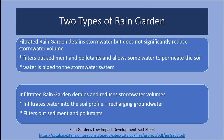Like a bioswale, there are two types of rain garden designs: filtrated and infiltrated. A filtrated rain garden detains stormwater but does not significantly reduce the volume. It filters out sediment and pollutants and allows some water to permeate the soil, while the rest is piped to the stormwater system. An infiltrated rain garden detains and reduces stormwater volume, infiltrates water into the soil profile recharging groundwater, and filters out sediments and pollutants.